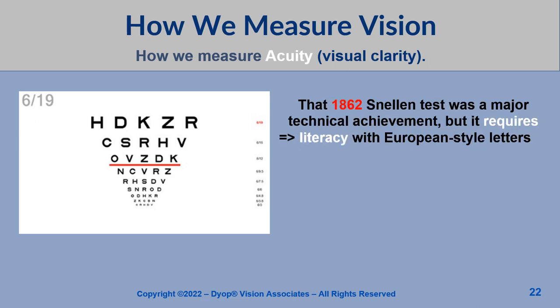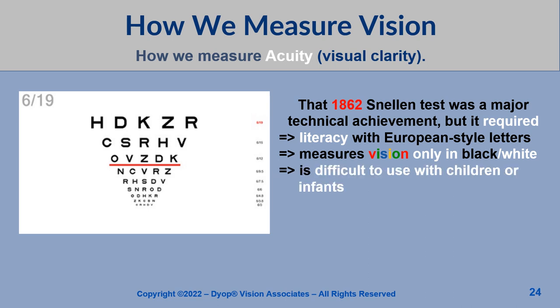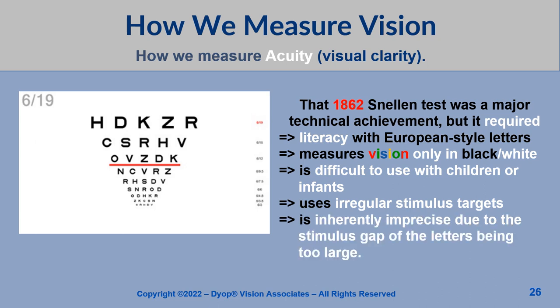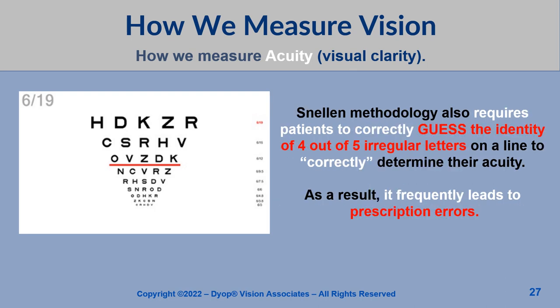That 1862 Snellen test was a major technical achievement, but it requires literacy with European-style letters. It also measures vision only in black and white, is difficult to use with children or infants, uses irregular stimulus targets, and is inherently imprecise due to the stimulus gap of the letters being too large. Snellen methodology also requires patients to correctly guess the identity of four out of five irregular letters on a line to correctly determine their acuity, frequently leading to prescription errors.